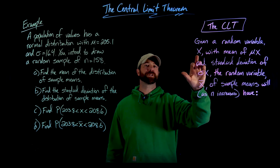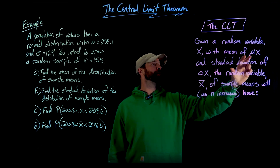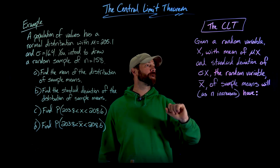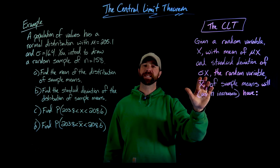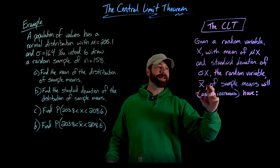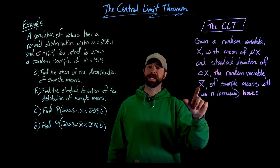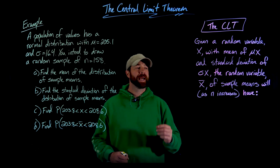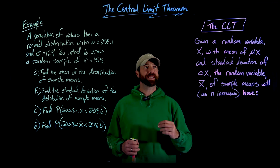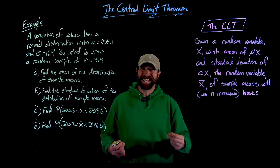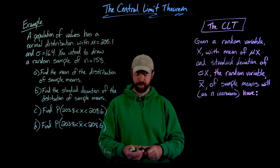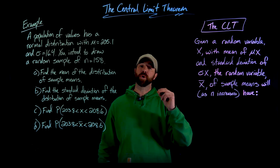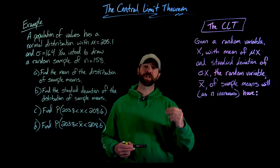Suppose we have a random variable that we'll denote with x that has a mean of mu_x — this is how we're going to denote the mean of the original random variable — and a standard deviation of sigma_x. Then if we create a random variable of these sample means, which we'll describe as x_bar, we have three main things that come out of the central limit theorem. Importantly, this doesn't necessitate anything about the distribution of the original random variable. The first very important thing is that the distribution of these sample means will always be normal for sufficiently large n.